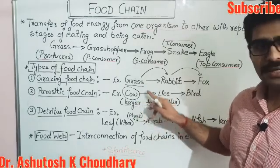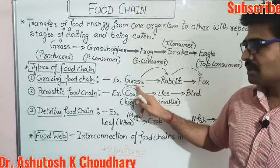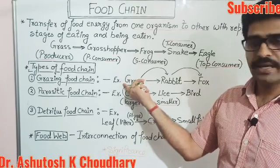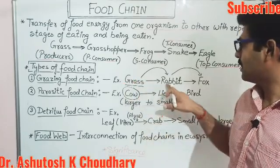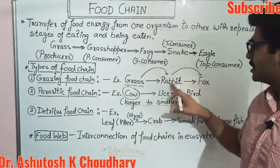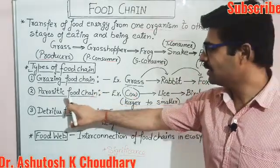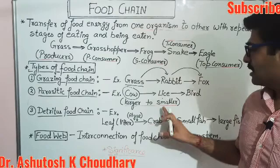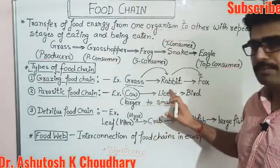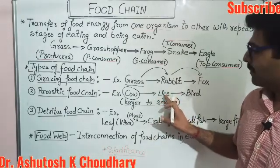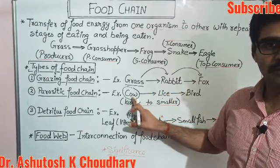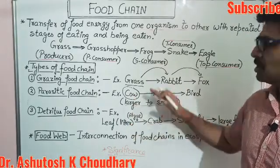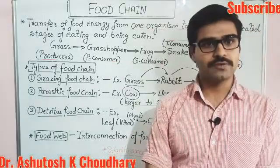Now remember the difference between parasitic and grazing food chains. In the grazing food chain, it starts from producers, and small animals are eaten by big animals — rabbit is smaller than fox. In the parasitic food chain, the larger animal is the host, and the smaller animal — the parasite — takes food from the larger one. So grazing goes small-to-large eaten, while parasitic goes from larger to smaller. That is the basic difference.